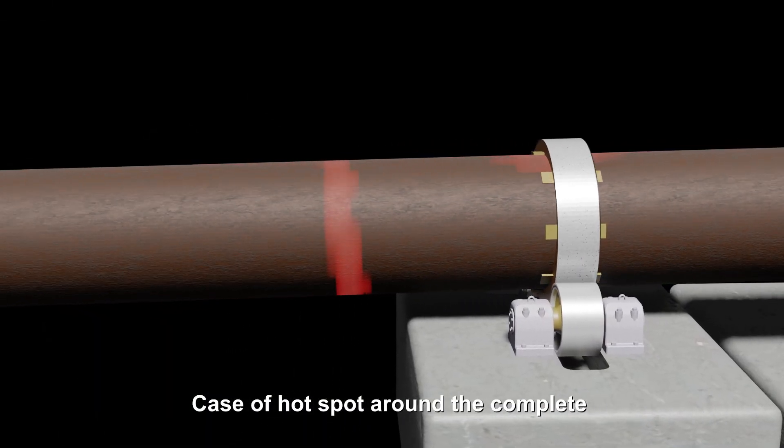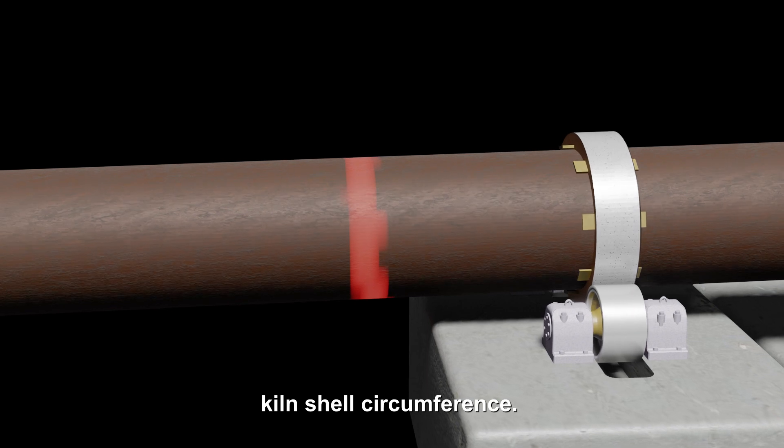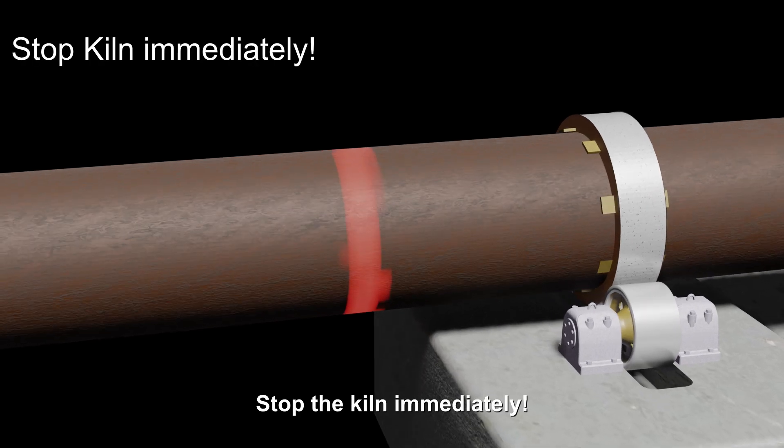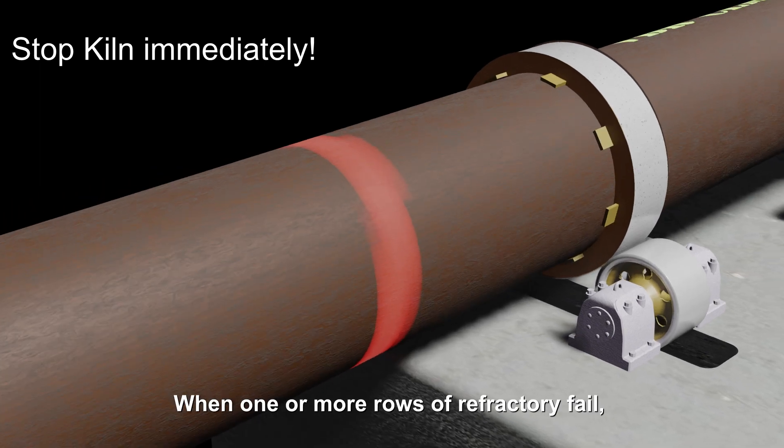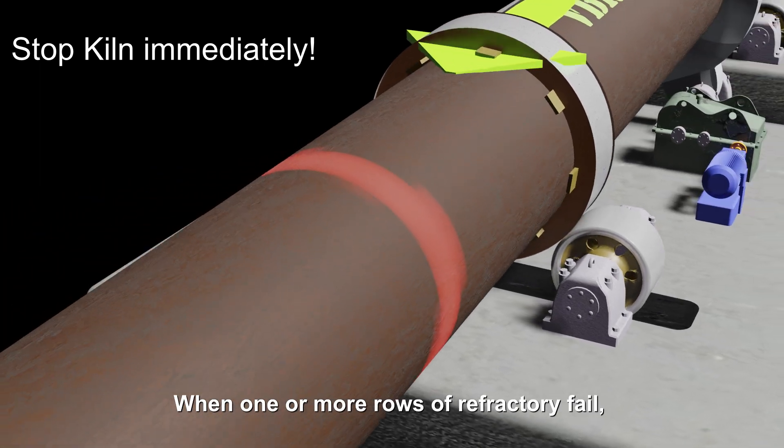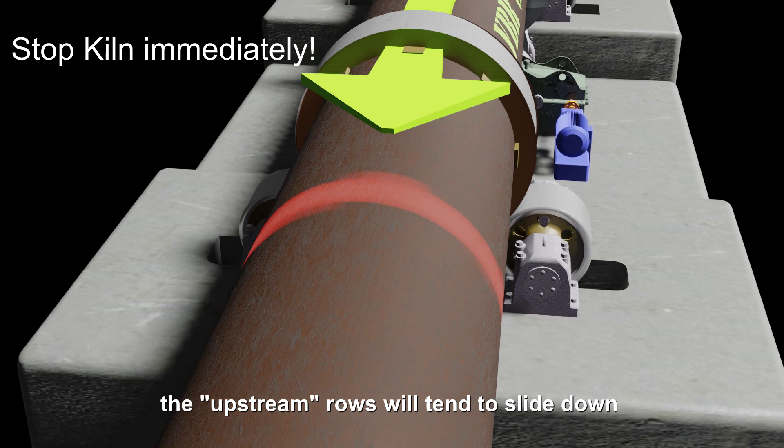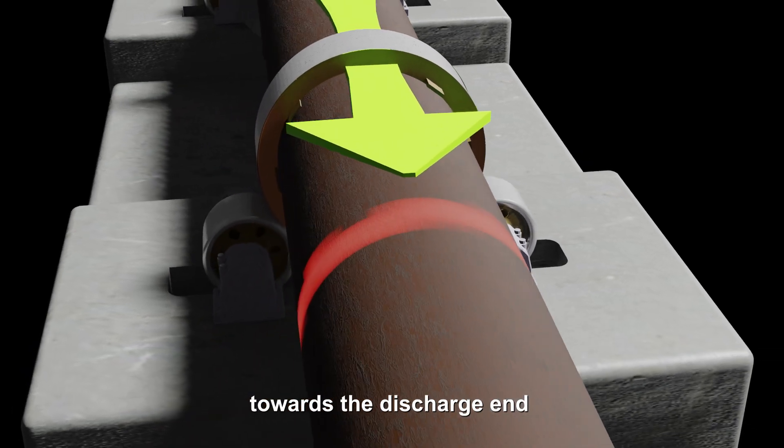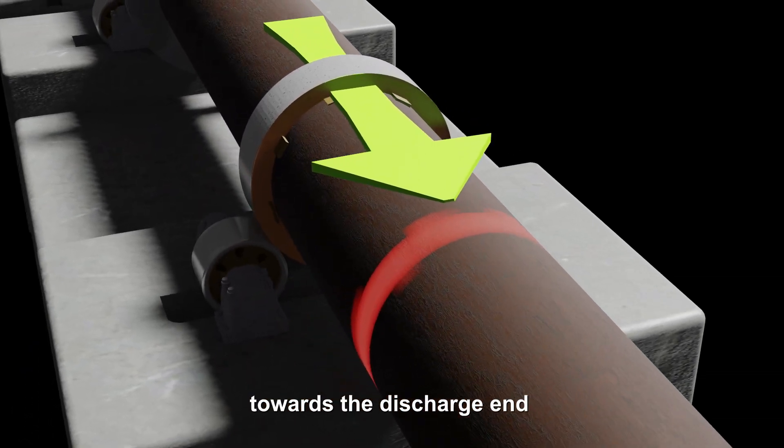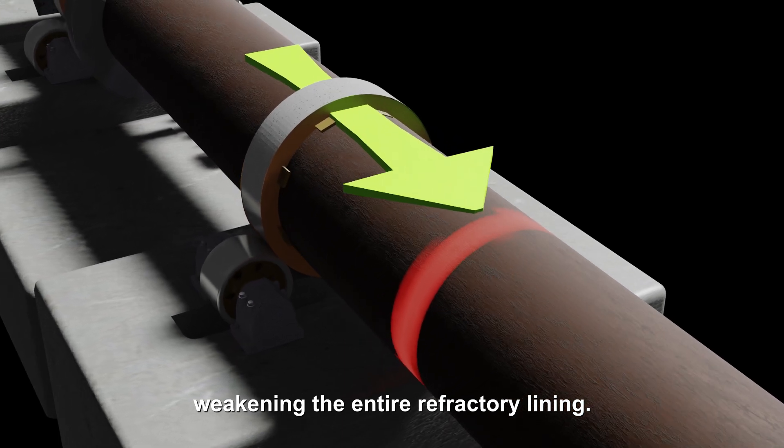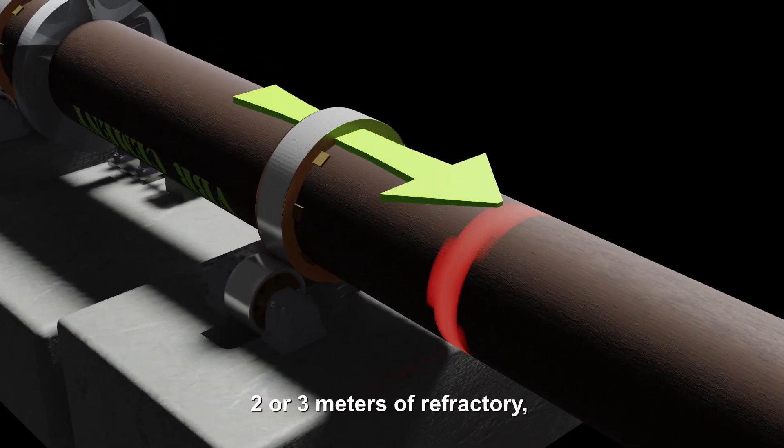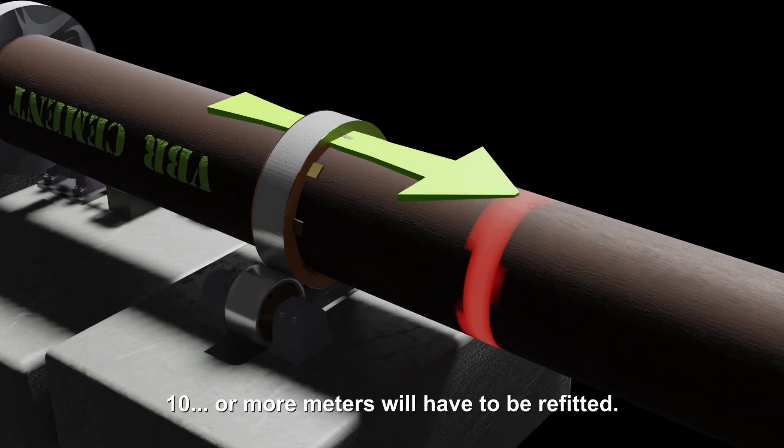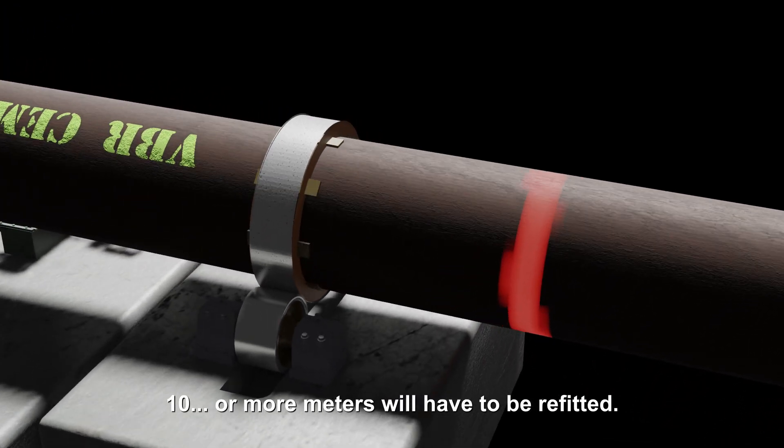Case of hot spot around the complete kiln shell circumference: stop the kiln immediately. When one or more rows of refractory fail, the upstream rows will tend to slide down towards the discharge end, weakening the entire refractory lining. As a result, instead of changing just two or three meters of refractory, 10 or more meters will have to be refitted.